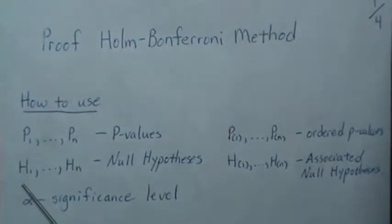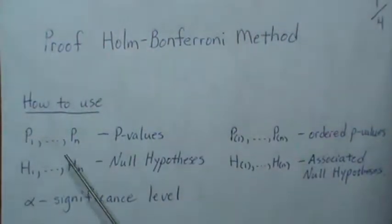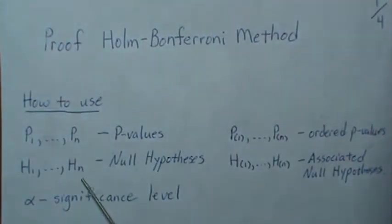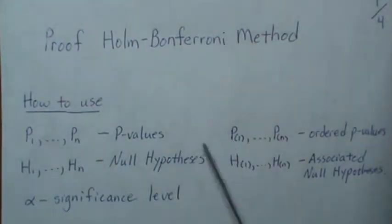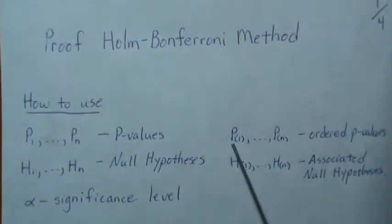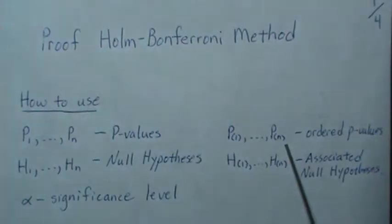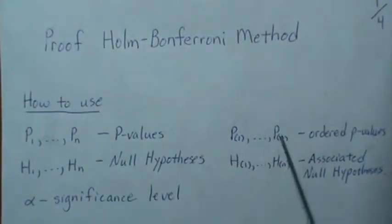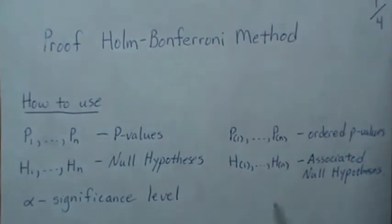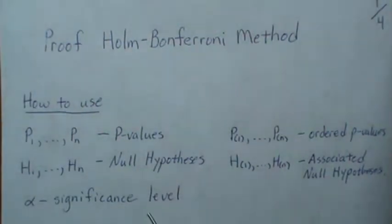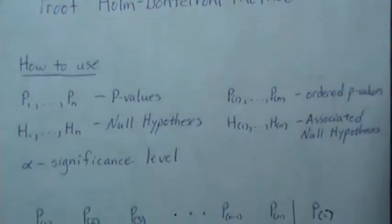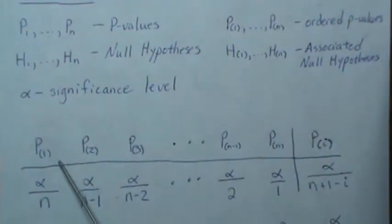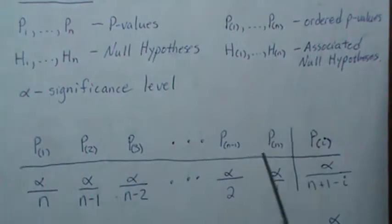Here we have n hypotheses with p-values associated with each hypothesis. What we do is we take these p-values and we order them from smallest to largest, and we keep the hypotheses associated with the p-values the same. We want an overall significance level of alpha. So we order the p-values — smallest on one end, largest on the other.